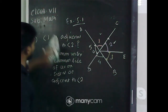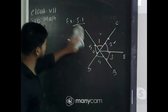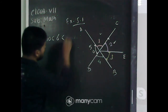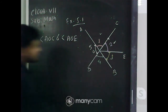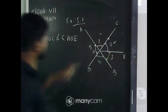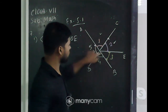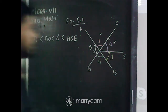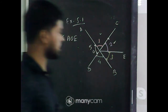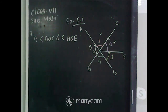Let us see whether angles AOC and AOE are adjacent or not. Now tell me whether these angles are adjacent or not. Angle AOC and angle AOE — someone is saying no, they are not adjacent angles. Can you tell me the reason? Which condition is not satisfied that makes these angles not adjacent?